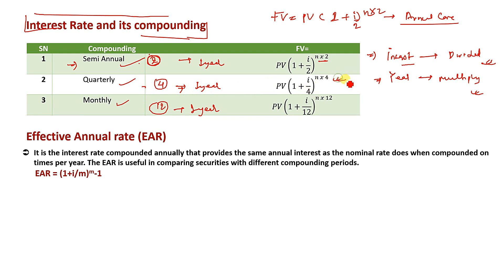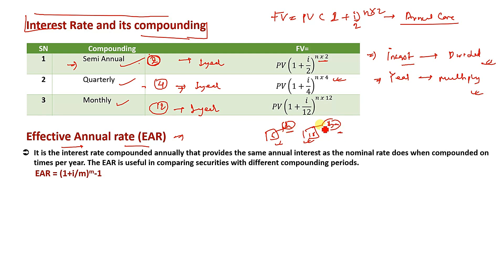The effective annual rate is used to compare securities. It is an effective annual rate — on the same basis of one year. The effective annual rate is used in comparing securities with different compounding periods. The definition: effective annual rate is the interest rate compounded annually that provides the same annual interest as the nominal interest rate does when compounding m times per year. The formula is: EAR = (1 + i/m)^m − 1.